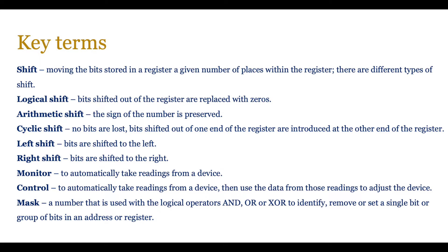A shift basically involves moving the bits stored in a register a given number of places within the register. There are different types of shifts possible. In a logical shift, bits are shifted out of the register and replaced with zero. So if you have a bit towards the end and you're shifting left, if a one at the beginning goes out, a zero is added to the end.